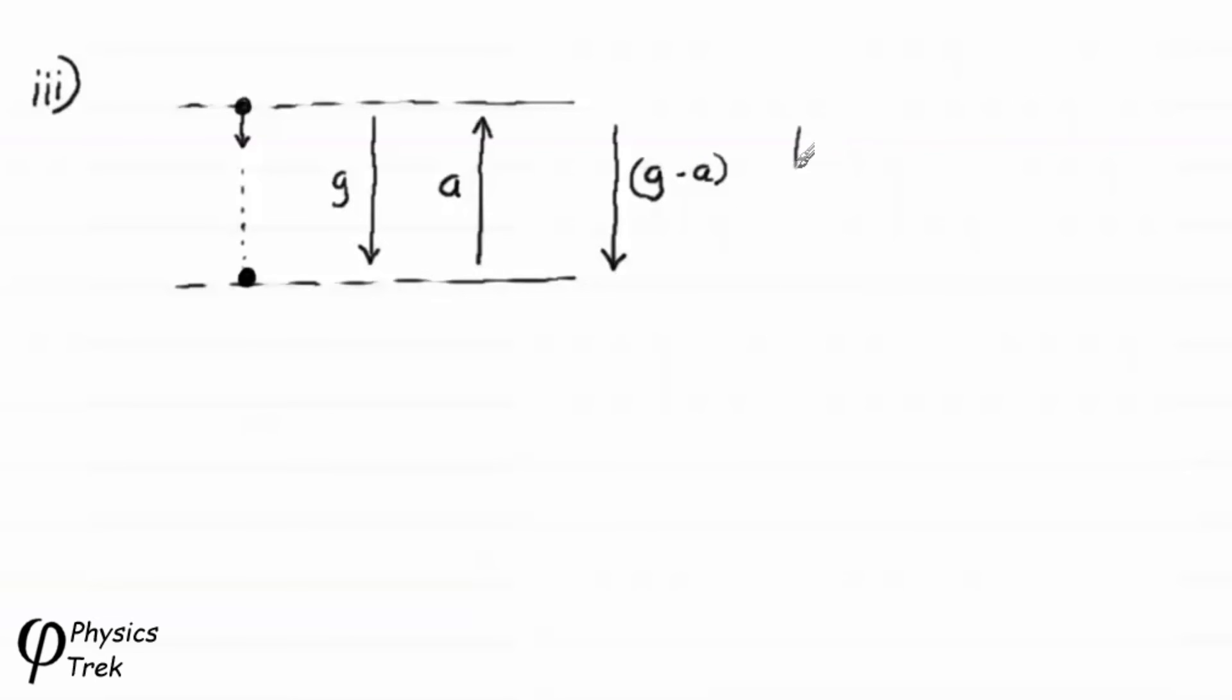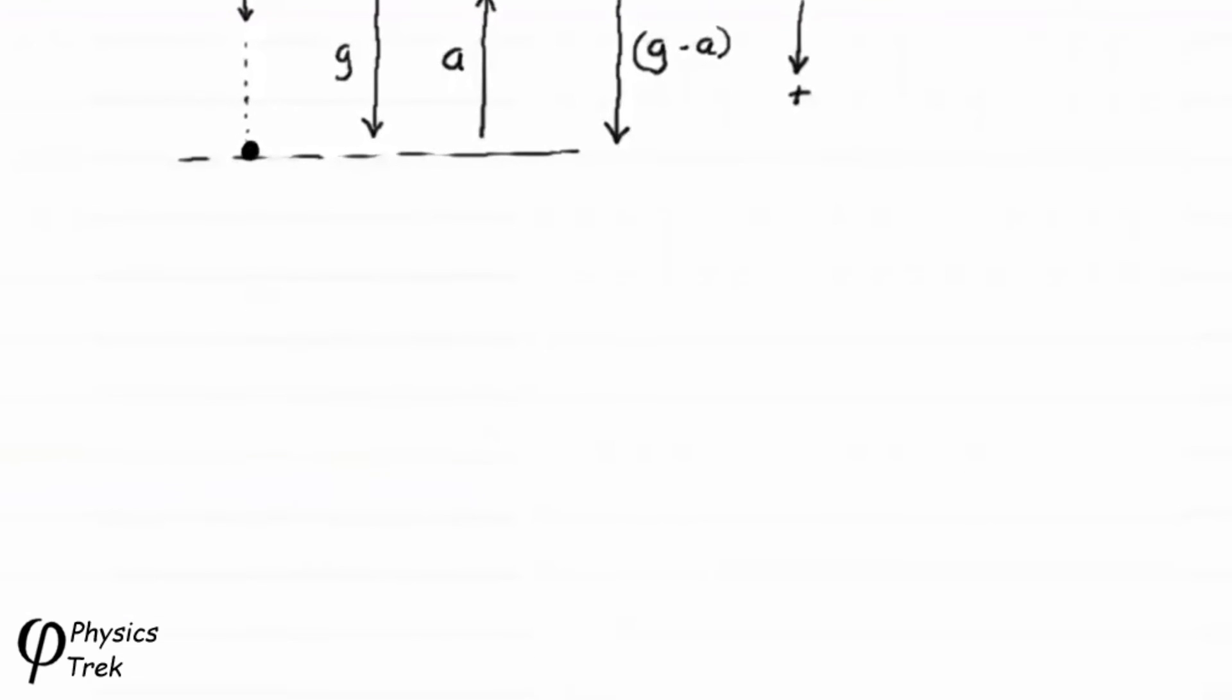So the net acceleration is g minus a, because positive is down. So let's write the equation now. So we have v2 squared minus u2 squared is equal to 2 bracket g minus a bracket times sd.